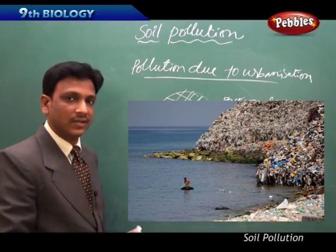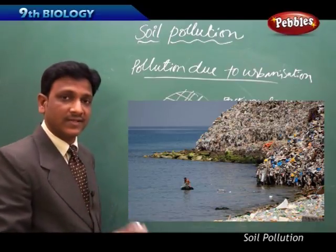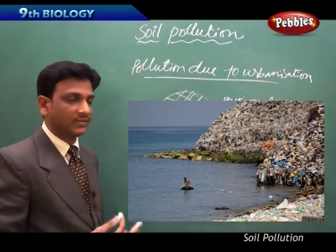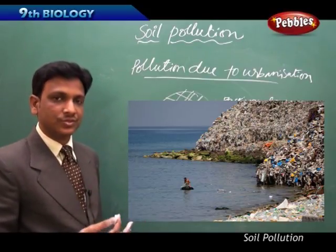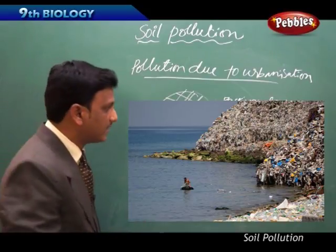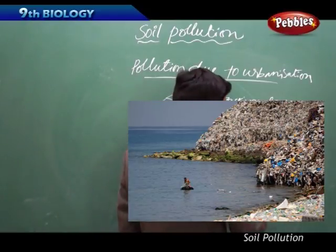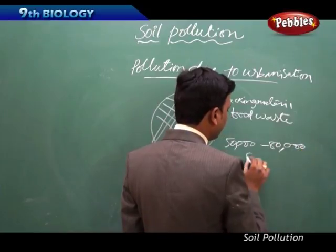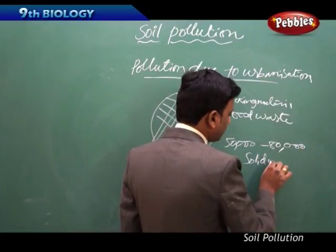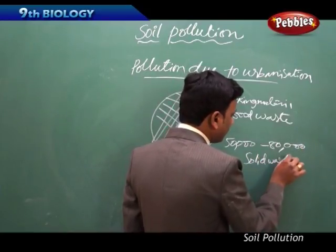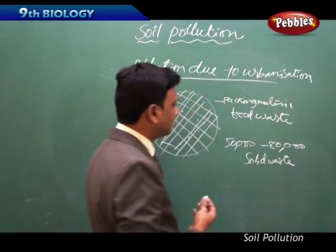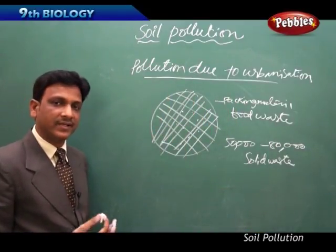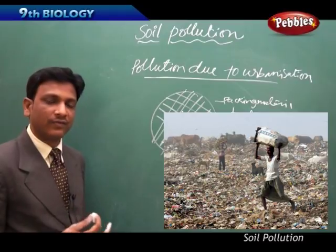Everyday from Indian cities, around 50,000 to 80,000 metric tons of solid waste is collected. What are they doing with this solid waste? They are simply dumping it, which creates a lot of land pollution. Many of the substances seep down - heavy metals cause severe problems.